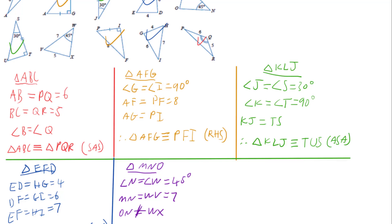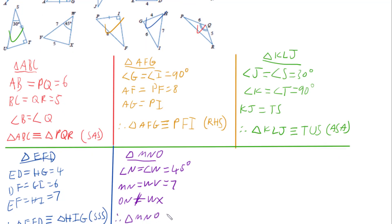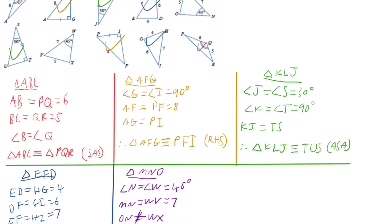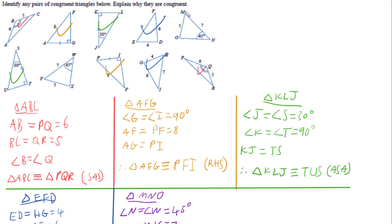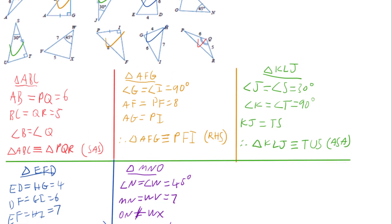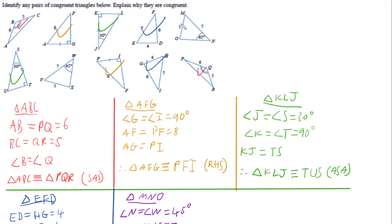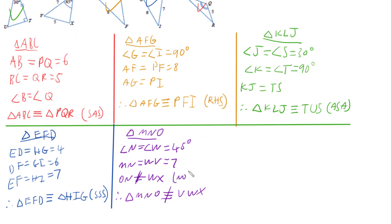We cannot say that ON necessarily equals WX, so these two are not congruent — there's no evidence to say they are. They don't pass any of the four tests: we'd need an angle between two sides, or two angles with a side between them, or three sides, or a right angle with hypotenuse and another side. We have an angle, but the two sides are not on either side of that angle, so we can't say they're the same.